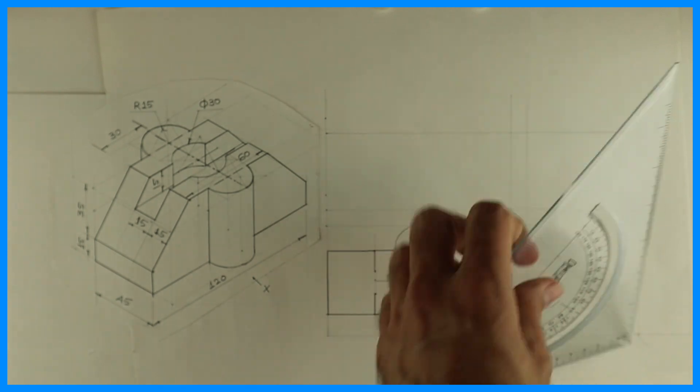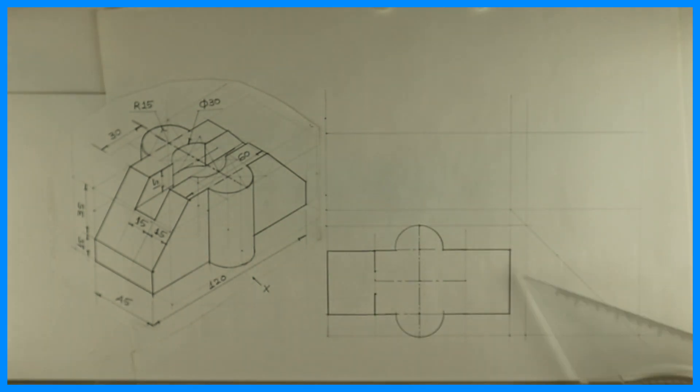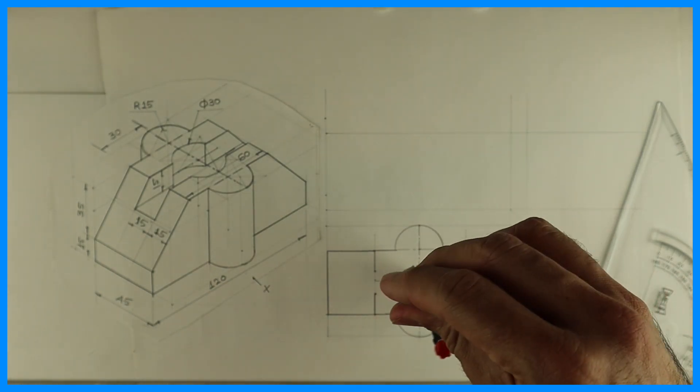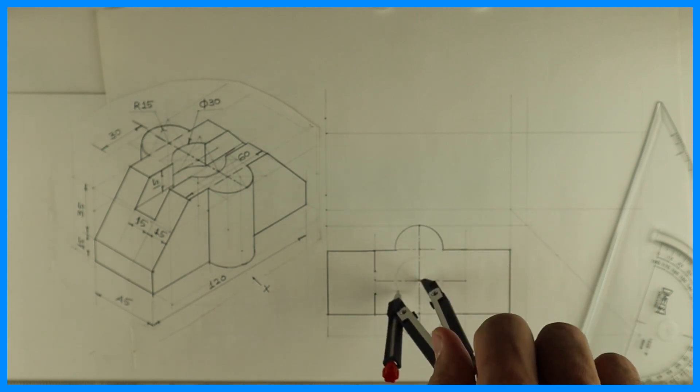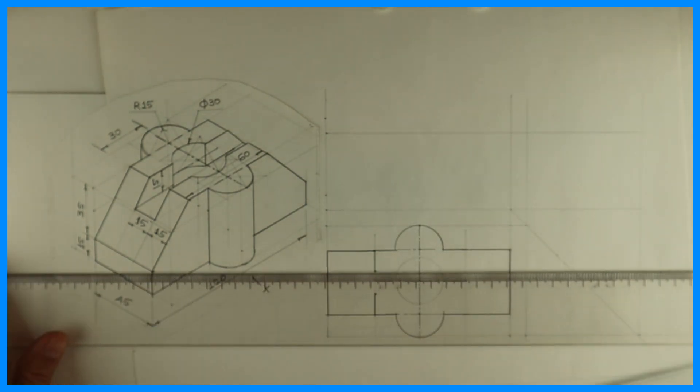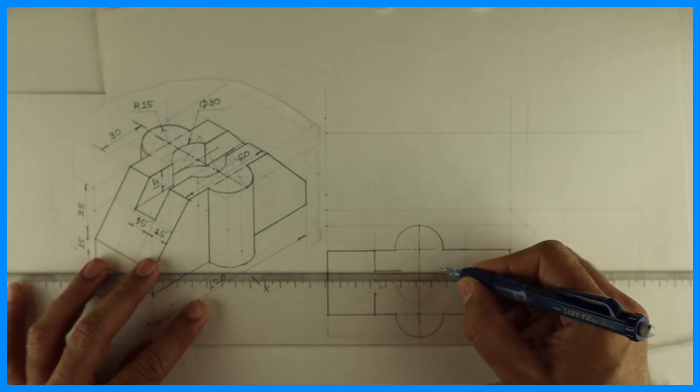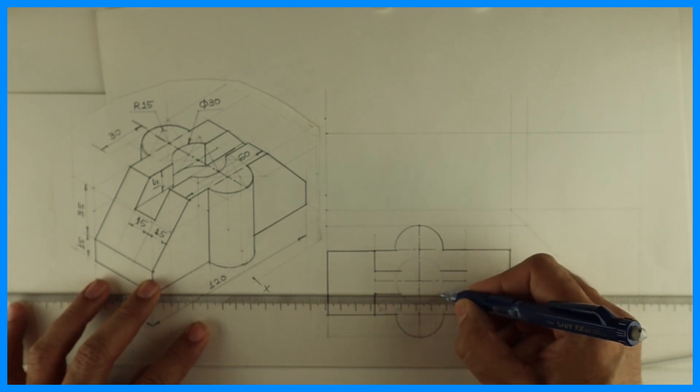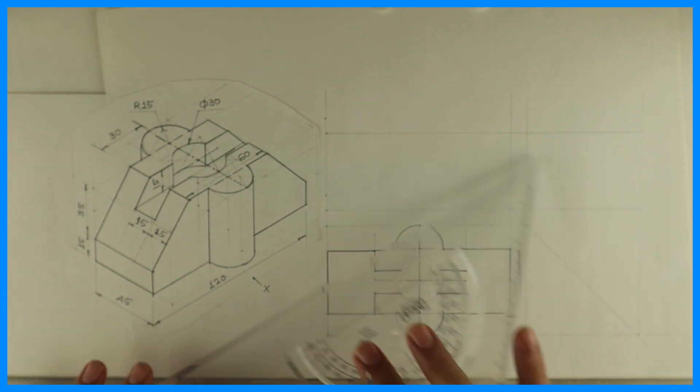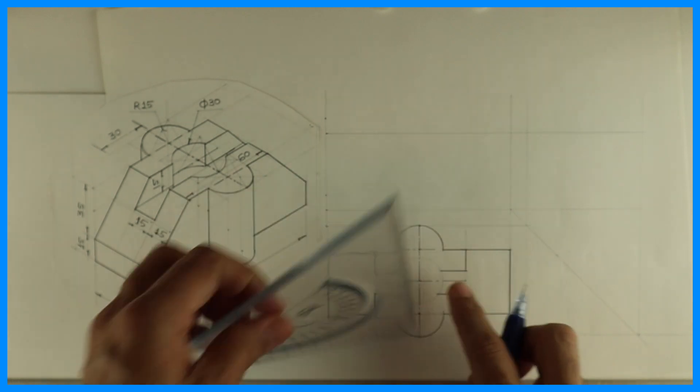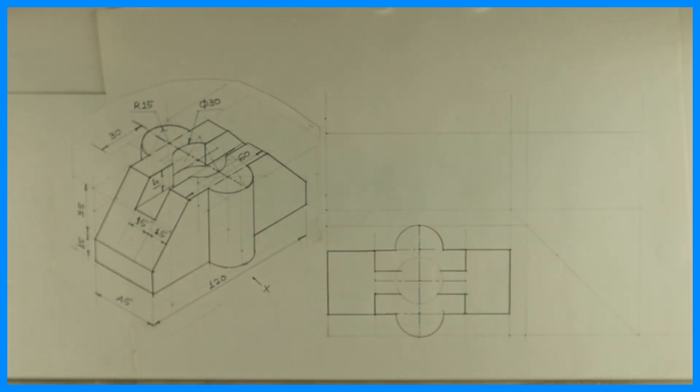Now this we don't know—that will come to know from front view. See, when we have a circle also, radius 15, but that is also not full. See, it is this much from front view.